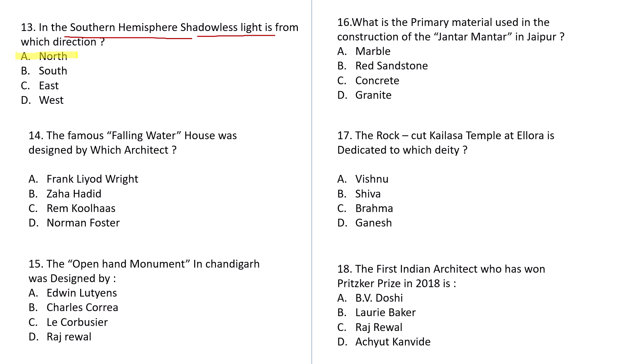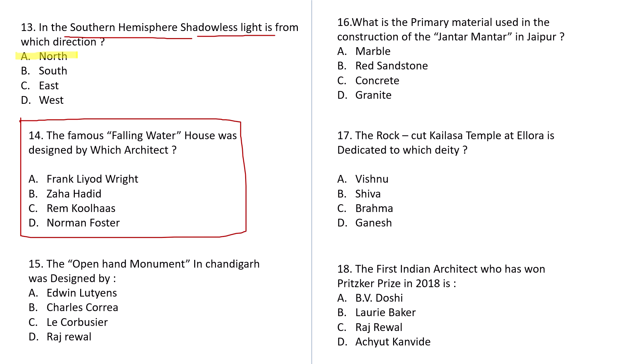Question number 14: The famous Fallingwater house was designed by which architect? All aspiring architecture students should know this — it was designed by architect Frank Lloyd Wright. Question number 15: The Open Hand monument in Chandigarh was designed by? Options: Edwin Lutyens, Charles Correa, Le Corbusier, or Raj Rewal. The answer is C — Le Corbusier.